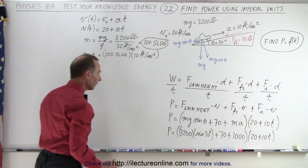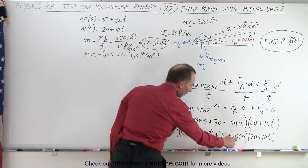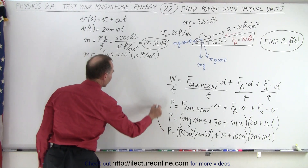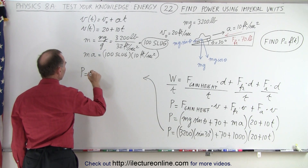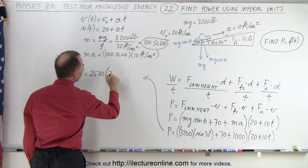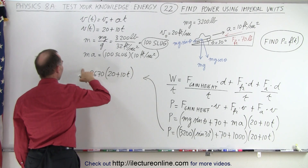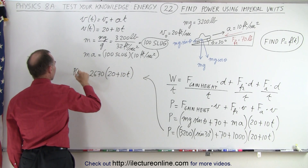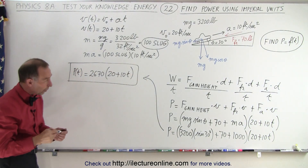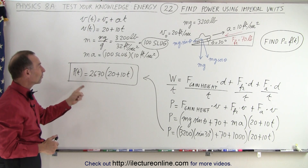One-half times 3200 is 1600, and adding 70 and 1000 gives a total of 2670. So we can say that power equals 2670 times (20 + 10t), and that is the power as a function of time. That is the final answer: the power required to drive that car uphill is 2670 × (20 + 10t).